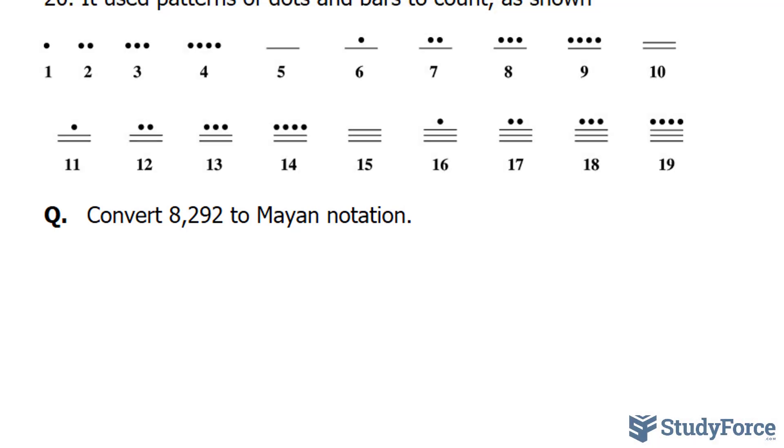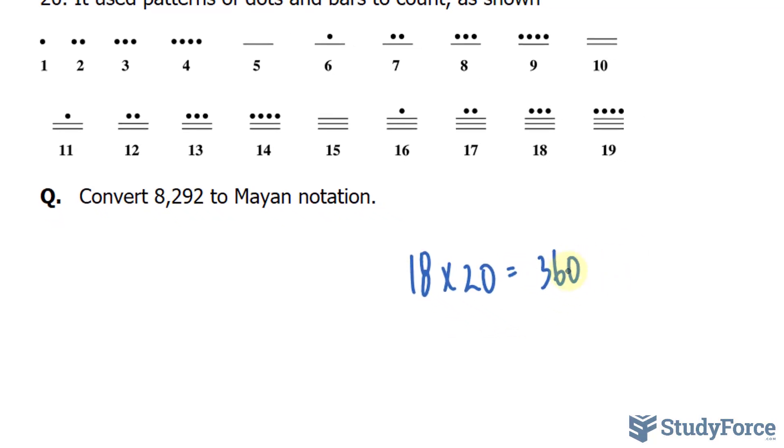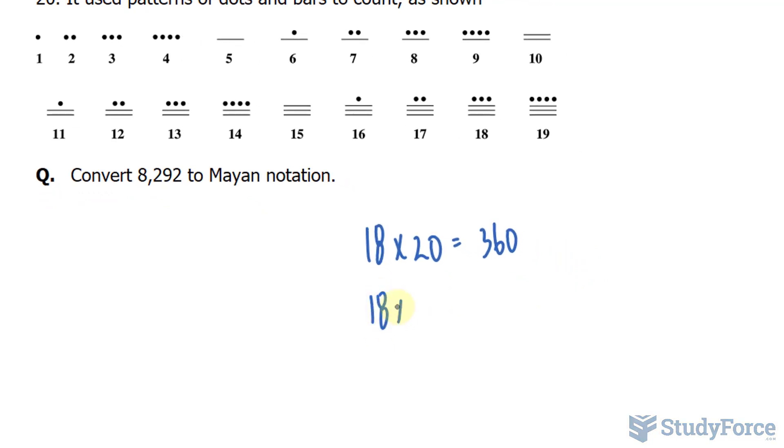Let's try to find the largest multiple of 360 that will divide into 8,292. We have 18 times 20, that equals 360. We also have 18 times 20 times 20, that equals 7,200. 7,200 is the largest multiple of 360 that will divide into this.